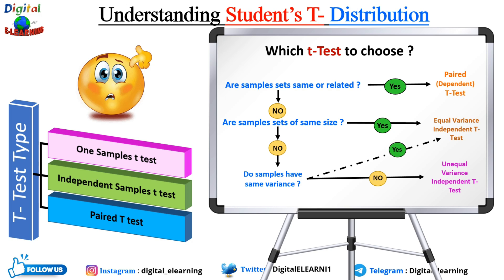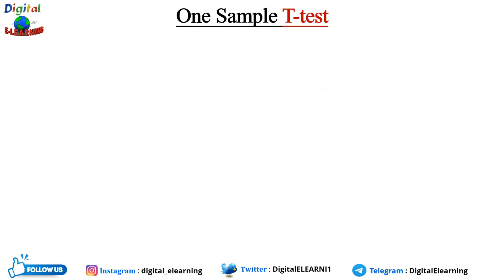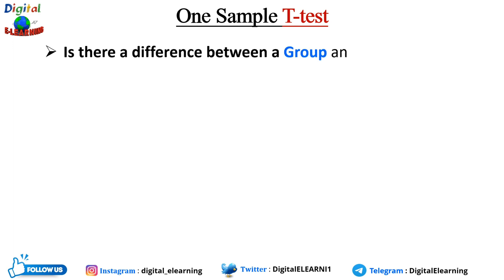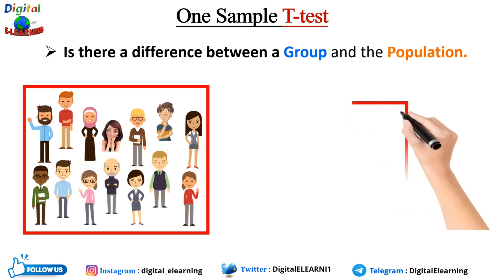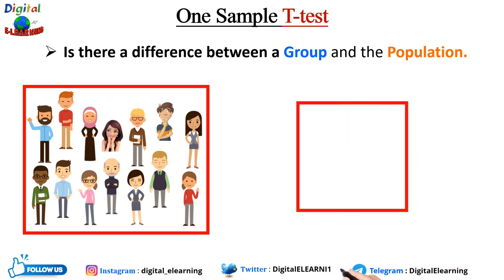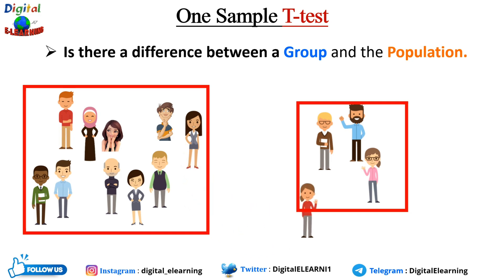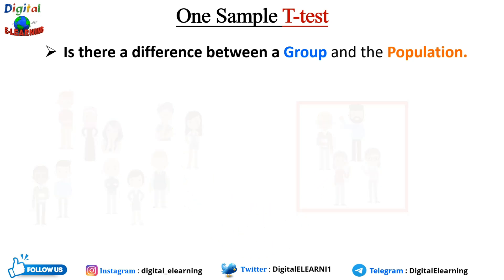For the one-sample t-test: if there is a difference between the group and the population, you perform a one-sample t-test. Here we compare the average of one sample group against the population mean. If you want to know whether the population mean is greater than or less than the other, perform the one-tail t-test.